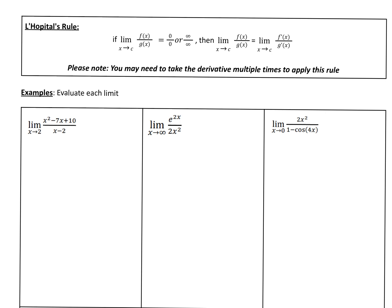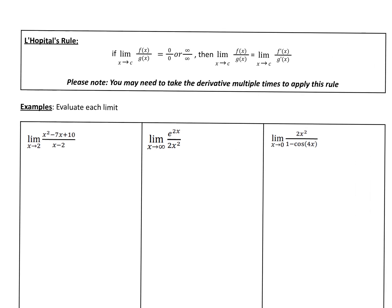So what does this have to do with L'Hopital's Rule? L'Hopital's Rule is a rule that uses derivatives to find the value of limits. Here's the formal definition: if the limit as x approaches c of f(x) over g(x) is 0 over 0 or infinity over infinity, we can calculate that limit by taking the limit as x approaches c of the derivative of the top over the derivative of the bottom.